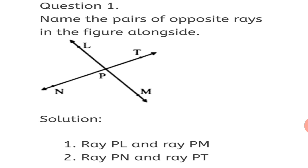Question 1: Name the pairs of opposite rays in the figure alongside. Point P is the common point for ray PL and ray PM, and they are lying in a straight line, so ray PL and ray PM are opposite rays. We have one more pair of opposite rays, that is ray PN and ray PT. They also have point P as the common origin and are lying exactly opposite to each other in a straight line.